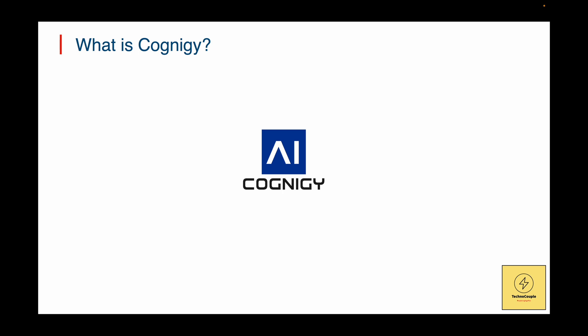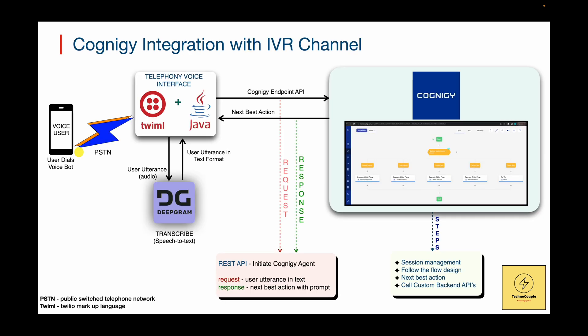What is Cognigy AI? Cognigy AI platform is a platform or tool that enables us to build and deploy conversational AI applications. It allows companies to create chatbots and virtual agents that can understand and respond to human conversations, improving customer service and automating repetitive tasks. We can develop self-service applications and expose them as a service using the Cognigy endpoint REST API, which allows us to integrate with custom applications as well.